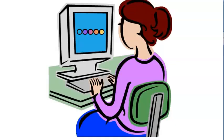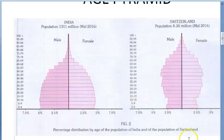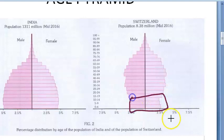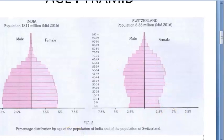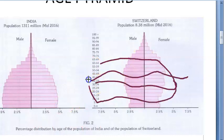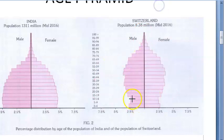Now comparing with Switzerland in 2016 — young people are much fewer. They are not producing many babies. Middle-aged people are the majority, and old people are a little more than in India.